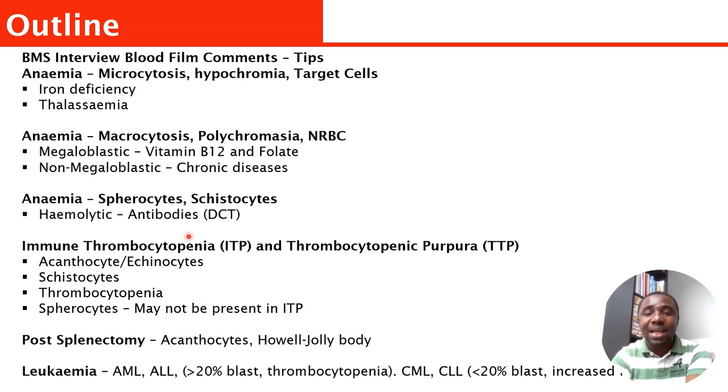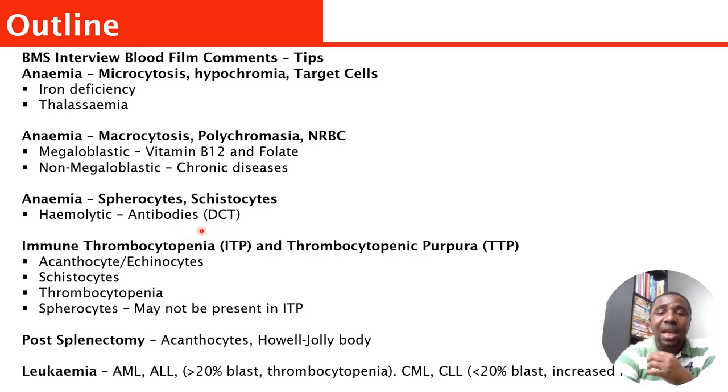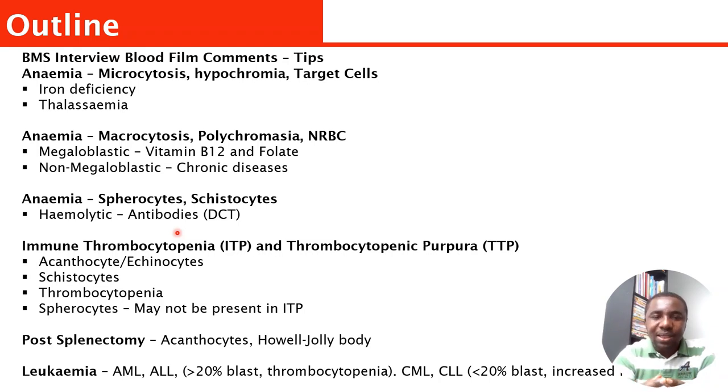Another thing you're going to get in terms of anemia is normocytic anemia. Under normocytic anemia, there are a number of causes, but most times in the lab they are likely to focus their question on spherocytes and schistocytes. Schistocytes are fragmented red blood cells. Once you see that, start thinking about hemolytic anemia — that person is hemolyzing, and that hemolysis most times can be due to antibodies.